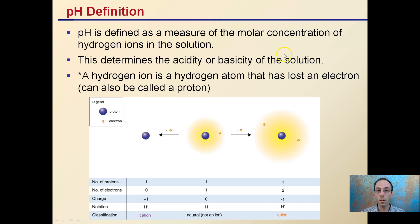Well, the definition is it's the measure of molar concentrations of hydrogen ions in a solution. It kind of determines whether it's an acid or a base. What does this measure mean? We're measuring hydrogen ions. What's a hydrogen ion?